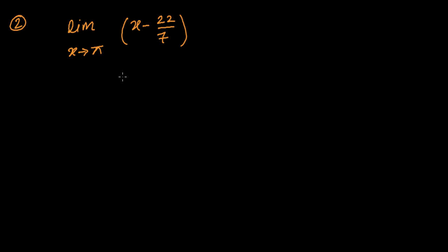Here we have the second question to evaluate a limit. We are in the very beginning stage of the limits chapter, and after learning limits we're going to learn continuity and derivatives. The question is: limit as x tends to pi of (x minus 22/7).